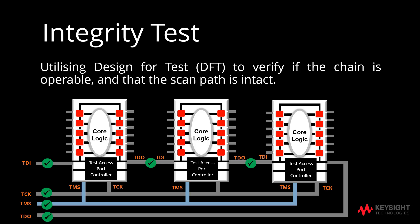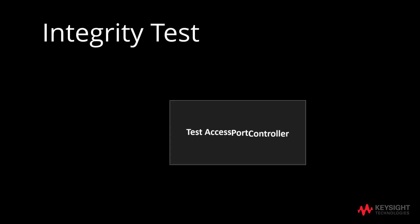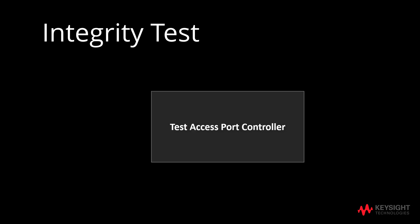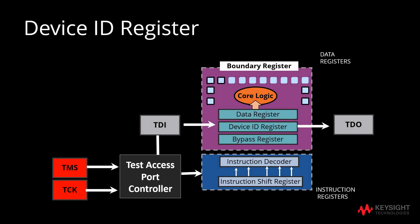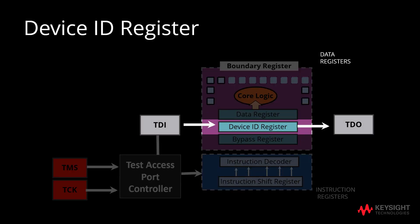Integrity test will also check if the TDO and TDI signals have stuck-at-0 or stuck-at-1 issues. The other two pins, TMS and TCK, will also be verified to check if they are working. On top of that, the integrity test will also check if the device ID register is working. This is done through ID code, whereby the test checks the content of the ID code registers of all devices in the chain.